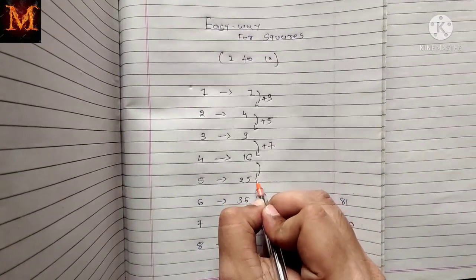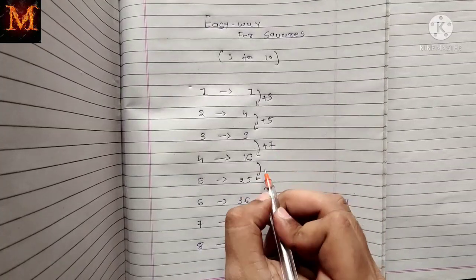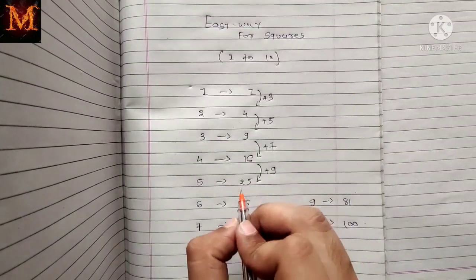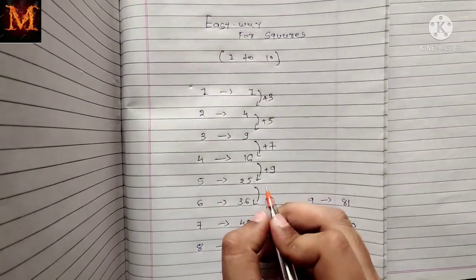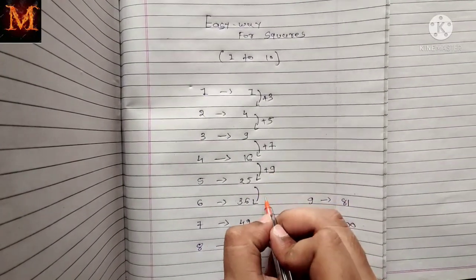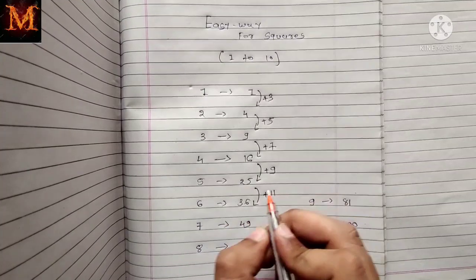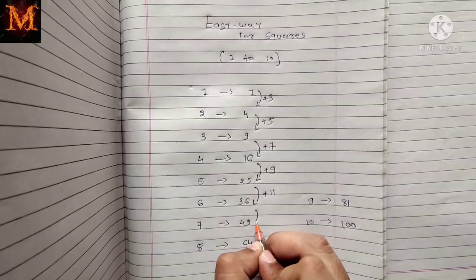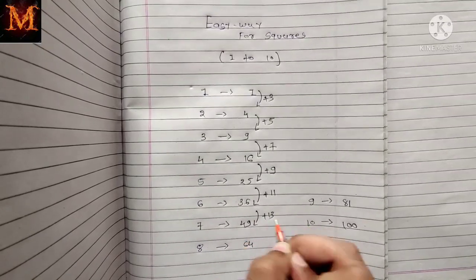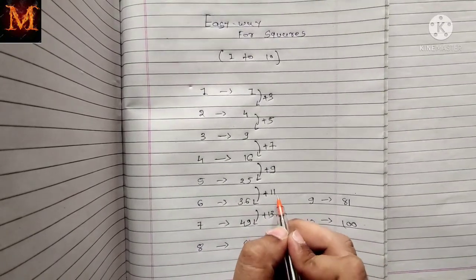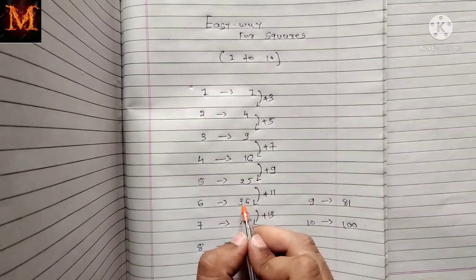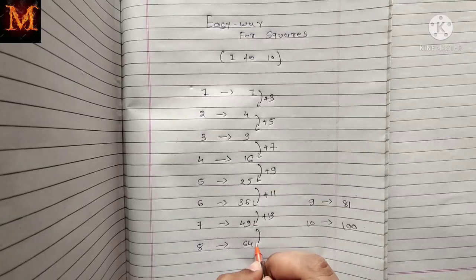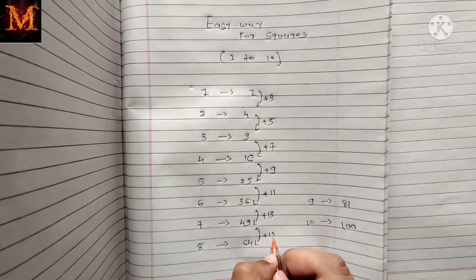Now for number 5, add another 2, making it plus 9. So 16 plus 9 is 25. Then add plus 2 to get plus 11. So 25 plus 11 is 36. Now add plus 13 — how? Add plus 2 to 11 to get 13. So 36 plus 13 is 49.